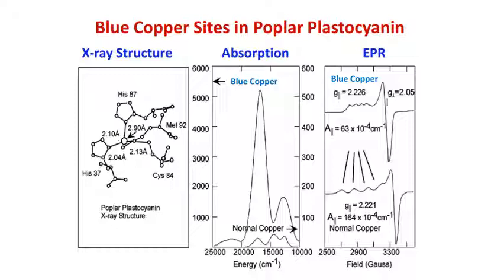Coming to the absorption spectroscopy of blue copper protein, there is a special feature this kind of protein has. The molar extinction coefficient or intensity of blue copper protein is very high — around 5000 to 6000 M⁻¹cm⁻¹. This is very high compared to normal copper complexes of the same concentration, which give a molar extinction coefficient below 100. This high intense band at around 600 nm is very characteristic for blue copper protein.